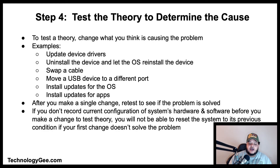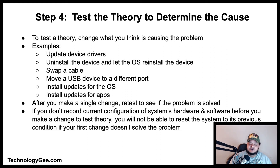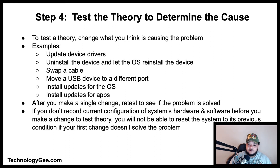Step four is to test the theory to determine the cause. Once you believe you have established a probable cause, it is time to test the theory. To test it, change what you think is causing the problem. Examples include updating device drivers, uninstalling the device and letting the OS reinstall it, swapping out cables, moving a USB device to a different port, installing OS updates, or installing app updates. After making a single change, retest to see if the problem is solved.